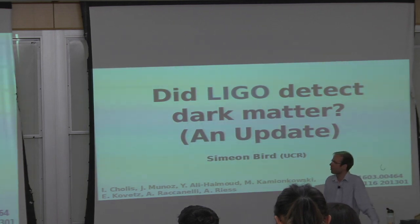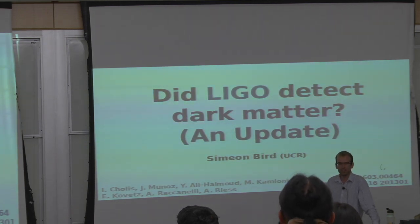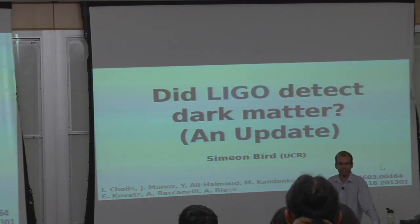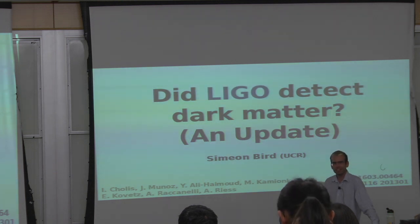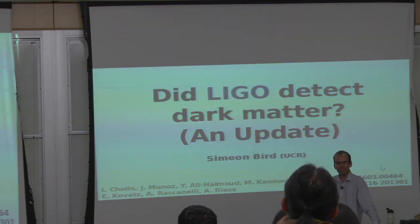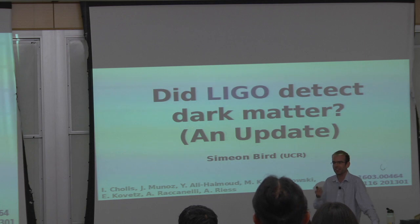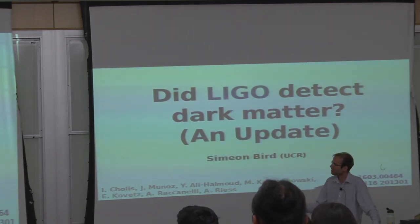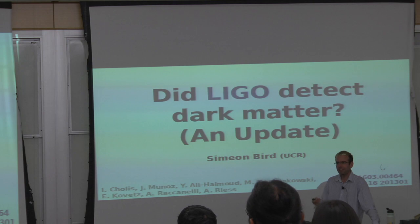That was a quick overview of my group. I now want to give you an update on the primordial black hole stuff. This is a paper I wrote three years ago — a crazy idea I had over lunch, something I expected would not work and would be ruled out. The question here is: did LIGO detect dark matter? What LIGO detected was the merger of a bunch of 30 solar mass black holes. The question is where did these black holes come from — how did they form?